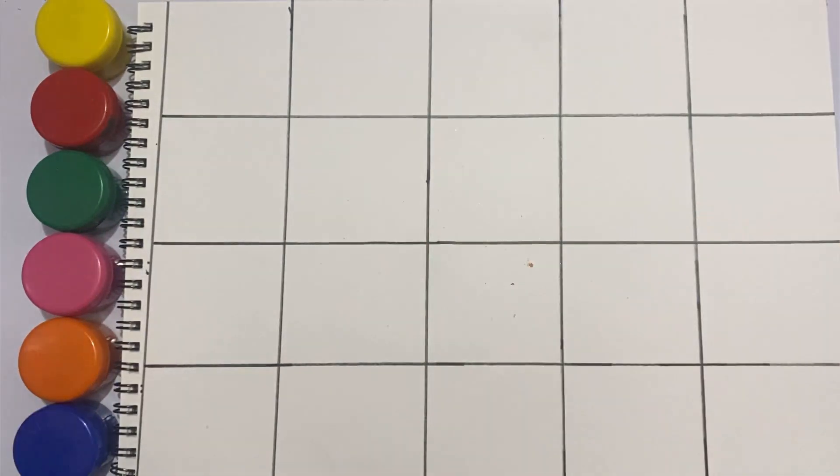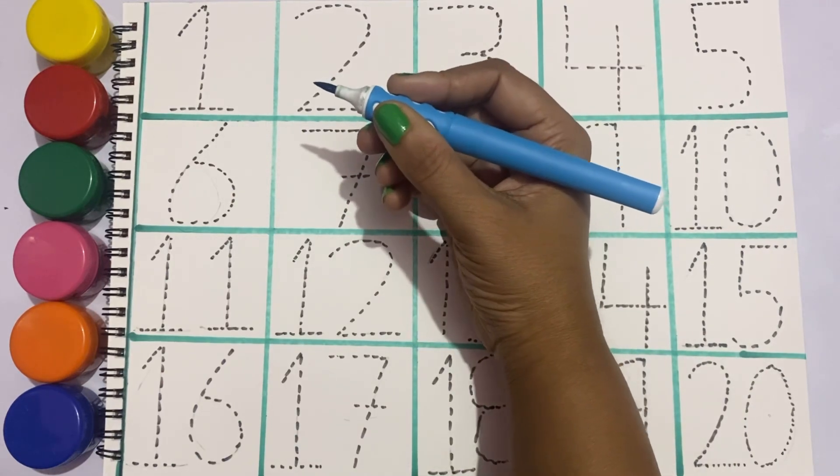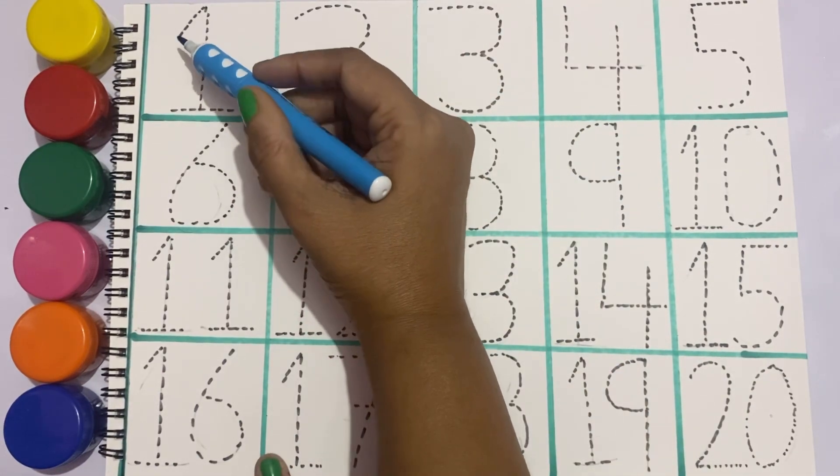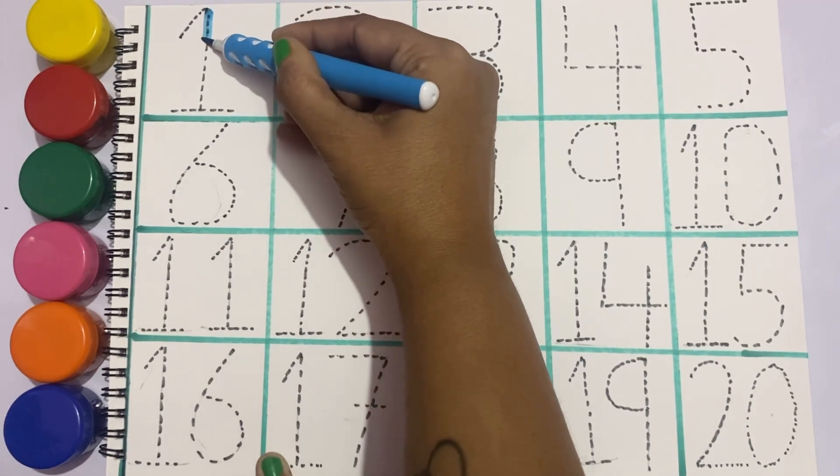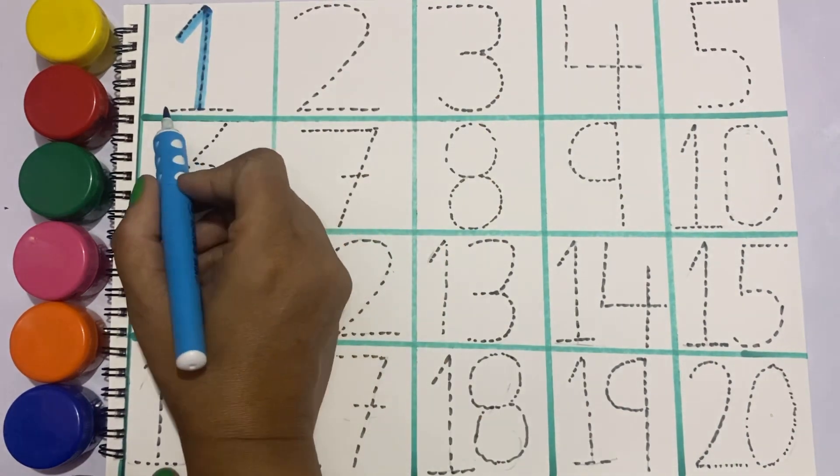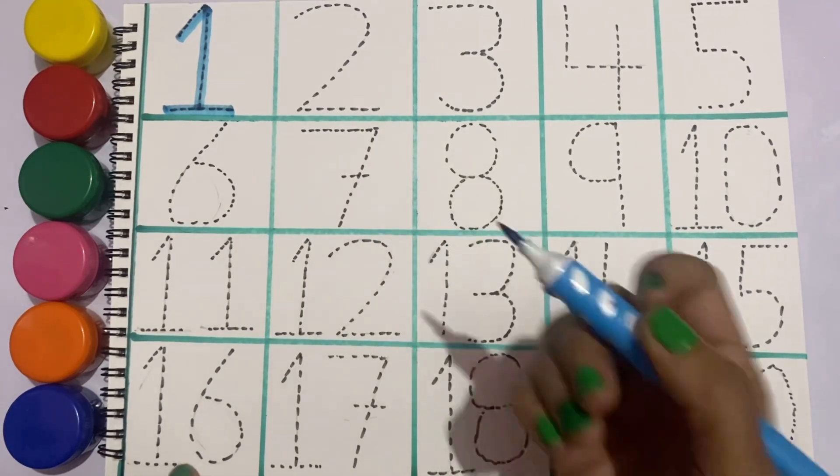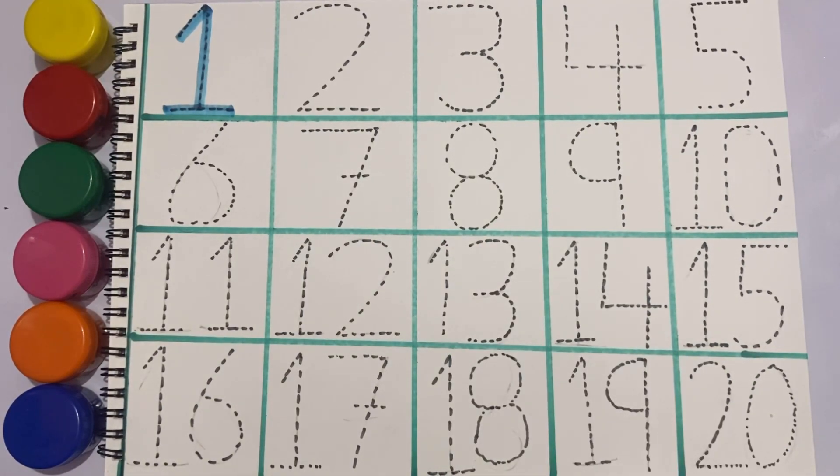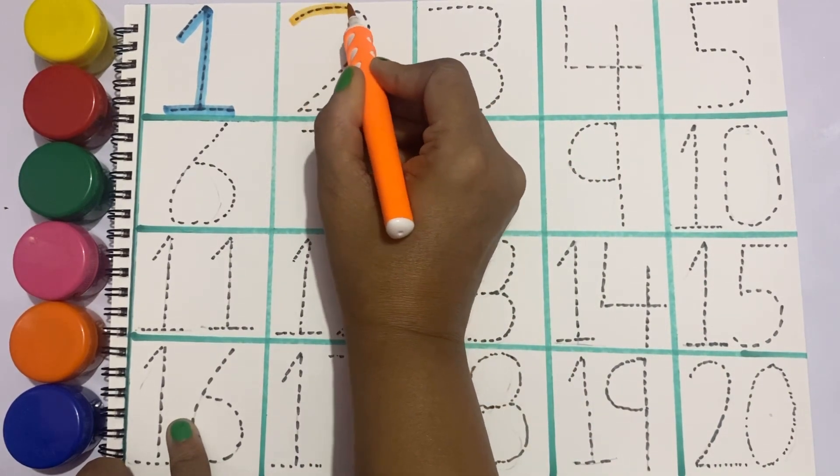So let's write one to twenty numbers. Sky blue color, let's draw one. One. Orange color, let's draw two.